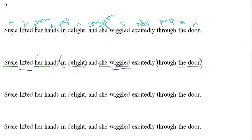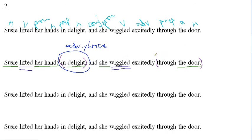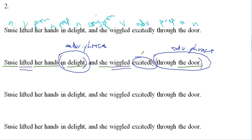'In delight' is talking about how Susie lifted — lifted how? In delight. So we're modifying back to 'lifted.' Since it's modifying a verb, that makes it an adverb phrase. 'Through the door' goes back to modify 'wiggled' — again, modifying a verb, so we've got another adverb phrase. And while we're on it, let's go ahead and take care of our other adverbs. Looking through our parts of speech, we have 'excitedly,' so let's go ahead and circle that — we'll label that as an adverb phrase.